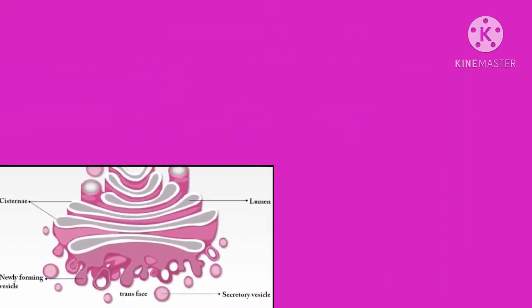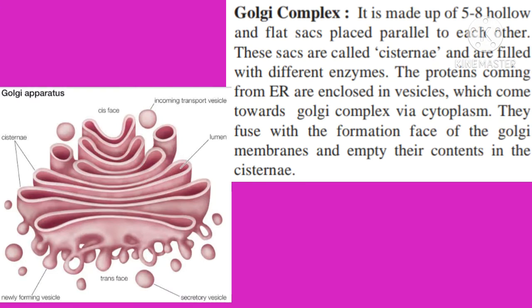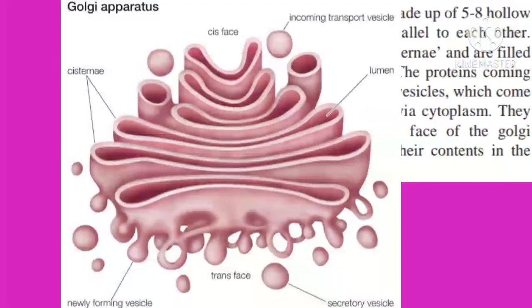The Golgi complex is made up of 5 to 8 hollow and flat sacs placed parallel to each other. These sacs are called cisternae and are filled with different enzymes. Enzymes are nothing but proteins and they act as catalysts. The proteins coming from the endoplasmic reticulum are enclosed in vesicles which come towards the Golgi complex via the cytoplasm. They fuse with the formation phase of the Golgi membranes and empty their contents into the cisternae.